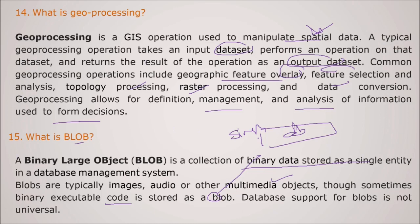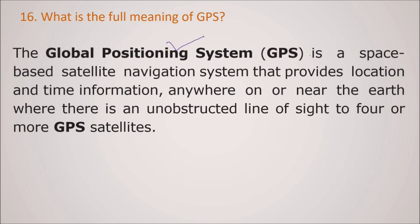What is full meaning of GPS? Global Positioning System. It is a space-based satellite navigation system that provides a location and time information anywhere on or near the earth where there is an unobstructed line of sight to four or more GPS satellites.